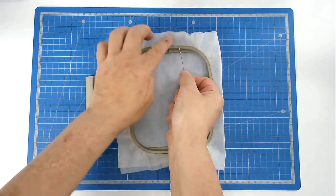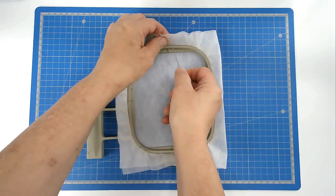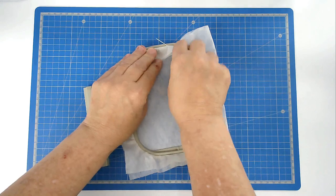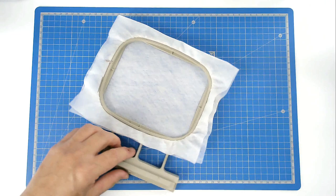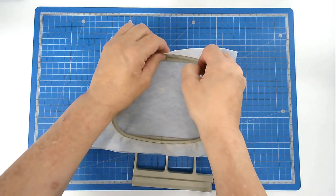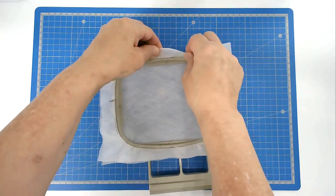Take your pin, rest it on top of the inside frame, push it through your stabilizer, bring it around and back through the stabilizer again. That will anchor it and you're going to do that on all four sides. The bigger your hoop, the more pins you will use.